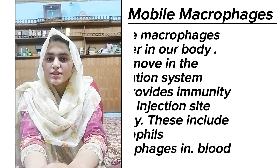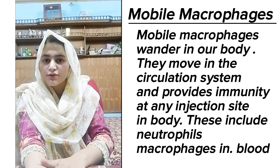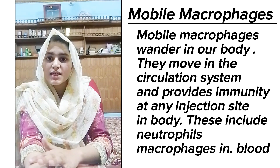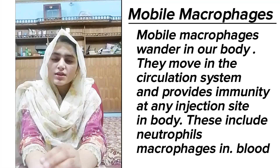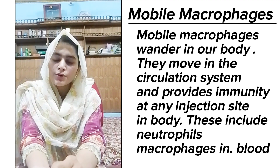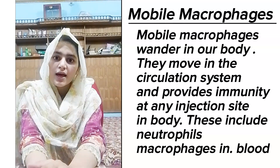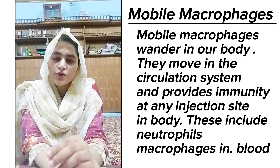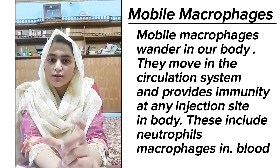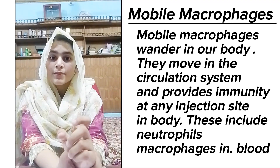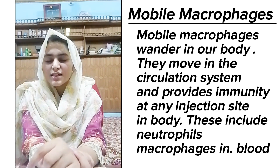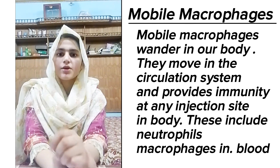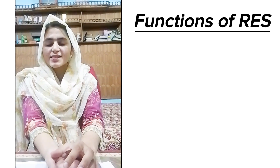Mobile macrophages provide immunity at the site of infection or where the skin or blood vessel is cut. These macrophages include neutrophils, or sometimes monocytes that develop into macrophages in the bloodstream and provide immunity at the site of infection. In cases of very severe injury, fixed macrophages in the lymphatic tissues move to the blood vessels and travel to the site of injury to provide immunity.